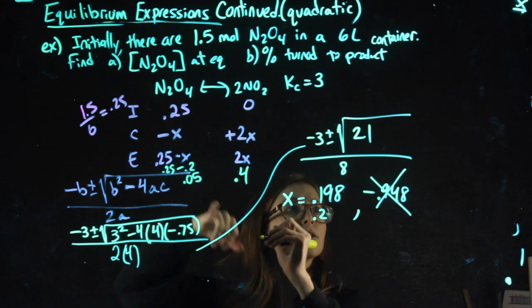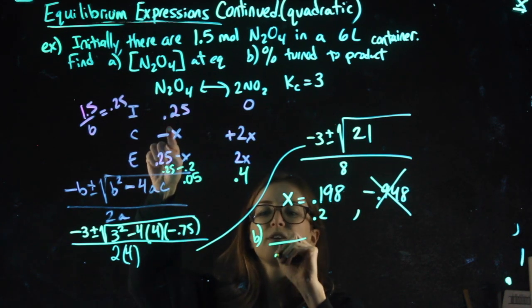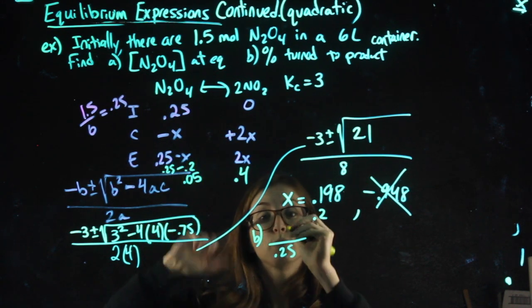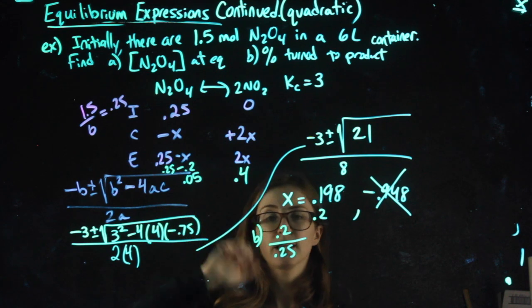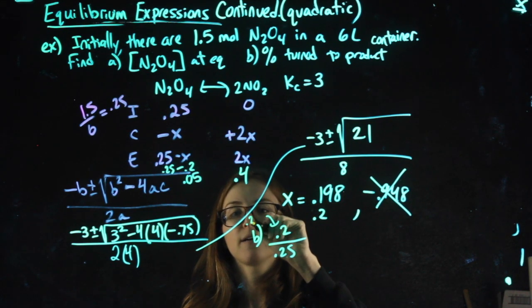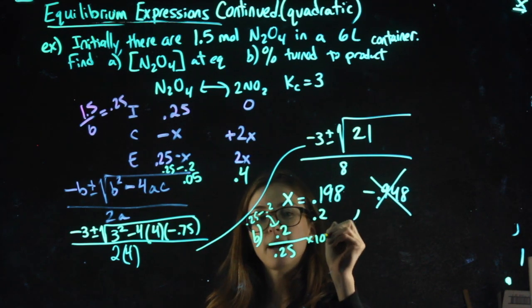The answer to B, percent turned to product. Again, of the 0.25 that could have reacted, it seems like 0.2 is what actually reacted, given that I was left with 0.05. So to do this, I did 0.2 over 0.25, and then I multiply by 100.